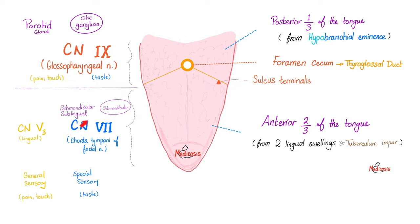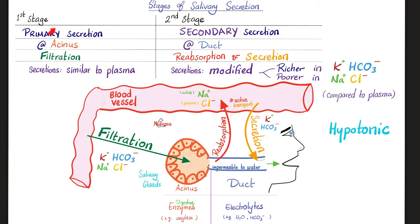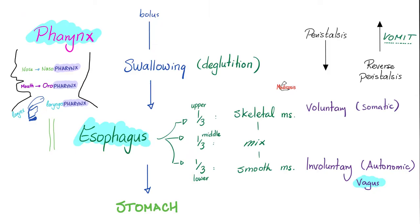Remember that the submandibular and sublingual salivary glands are supplied by cranial nerve 7, the facial nerve, but the parotid gland is supplied by the glossopharyngeal nerve. Here is salivation — primary stage versus secondary stage. Just remember: your saliva, relative to your plasma, is richer in potassium and bicarbonate, but poorer in sodium and chloride. Your saliva is hypotonic, but your plasma is isotonic. After chewing and salivation, it's time for you to swallow — deglutition.